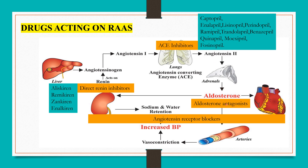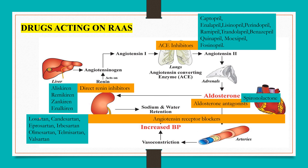Aldosterone antagonists: the drug is spironolactone, which is discussed in detail in the diuretic series. Angiotensin receptor blockers act by blocking angiotensin receptors present on various organs like the kidney, heart, and blood vessels. The drugs are losartan, candesartan, eprosartan, irbesartan, olmesartan, telmisartan, and valsartan. All these drugs end with the suffix '-sartan'.